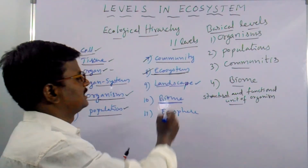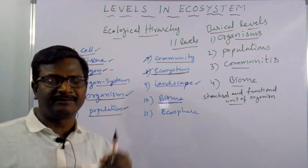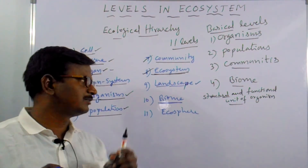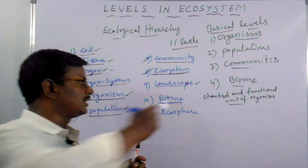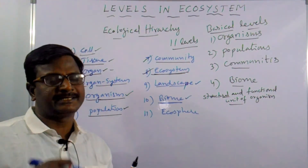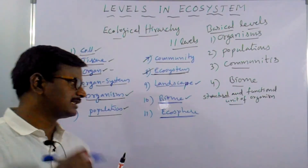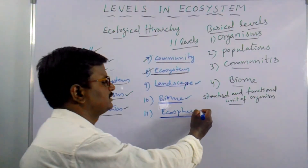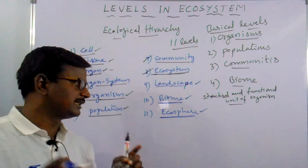The next level is biome. Biome means the large area which has different types of communities of plants and animals interacting with themselves. The last and largest level of ecological hierarchy is the ecosphere. The total habitable zones present on the earth are all included in the ecosphere.